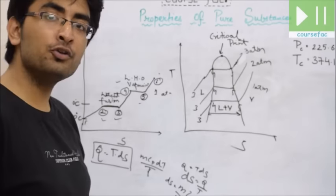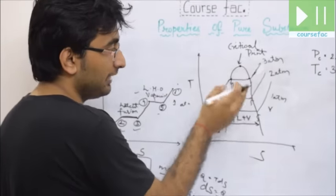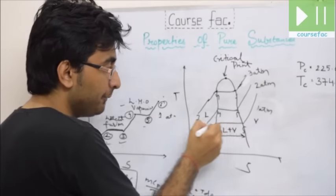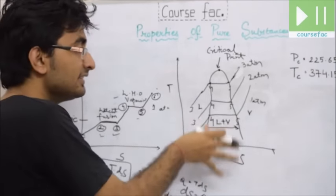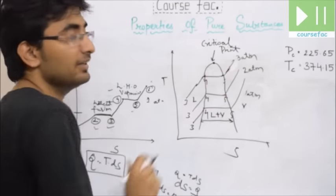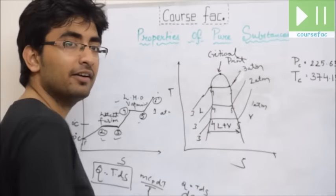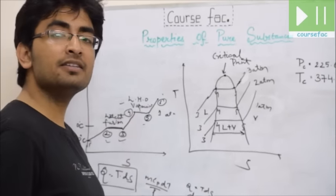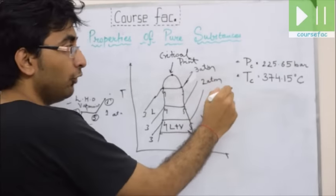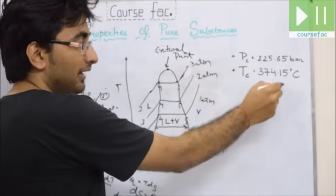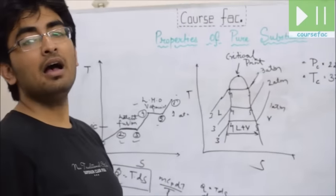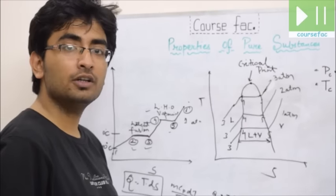As pressure increases from 1 atm to 2 atm to 3 atm, the liquid-vapor transition zone decreases — we require less enthalpy to convert liquid to vapor — and finally becomes zero at the critical point. This concept is used in the pressure cooker. For water, the critical pressure is 225.65 bar and the critical temperature is 374.15 degrees Celsius.